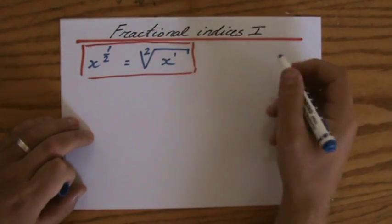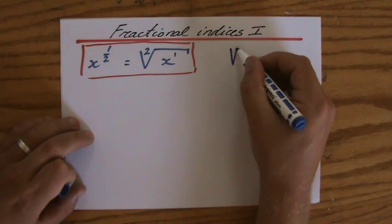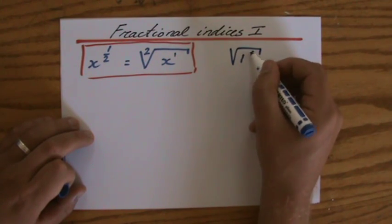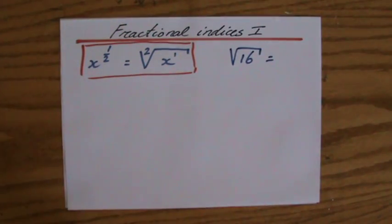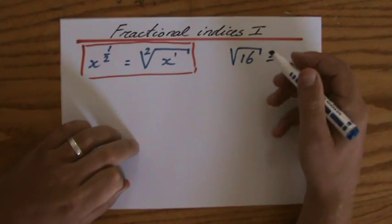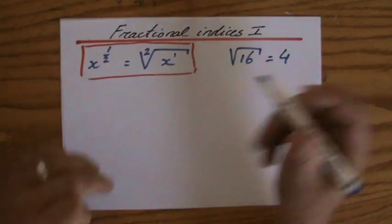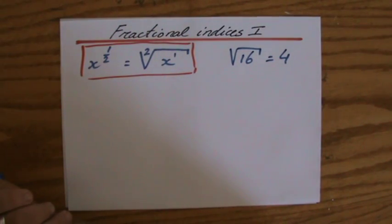I'm going to ask you the question: what is the square root of 16? Which number multiplied by itself is 16? Hopefully you say, well, the answer is 4, because 4 squared is 16. Excellent. So the square root of 16 is 4.